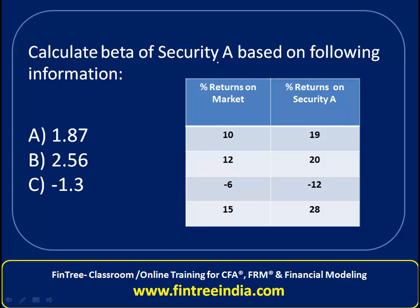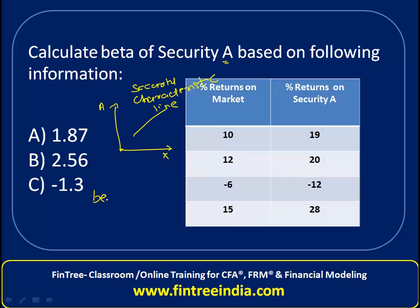The question requires us to calculate beta of security A. If you put the returns on market on the x-axis and returns on a particular stock on the y-axis, then the line that we draw is typically called the security characteristic line. The slope of that line is beta. The formula for beta is the covariance of a particular security A and the market, divided by the variance of the market.